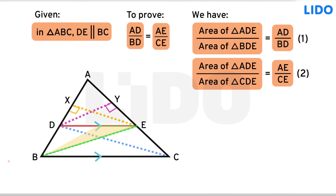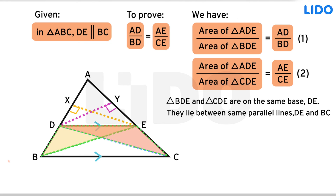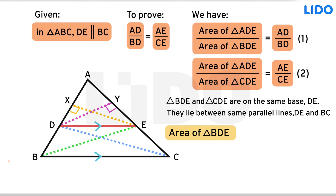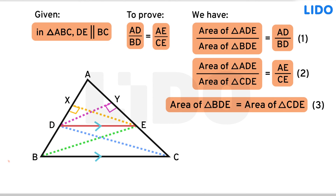Triangle BDE and triangle CDE are on the same base DE. They lie between the same parallel lines DE and BC. Thus, the area of triangle BDE is equal to the area of triangle CDE. From equations 1, 2, and 3, we can conclude that AD over BD is equal to AE over CE.